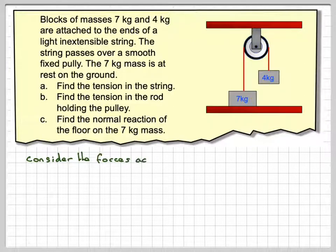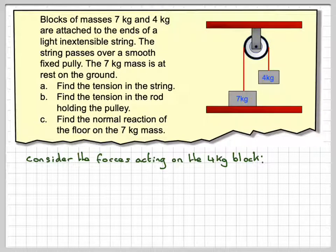OK, so consider the forces acting on the 4kg block. What you need to do is treat each thing separately and look at the forces acting on them. So there's a 4kg block. We've got the weight acting downward, which is 4g newtons.